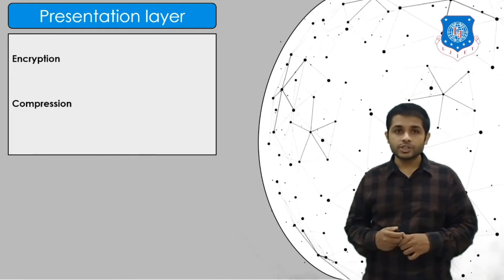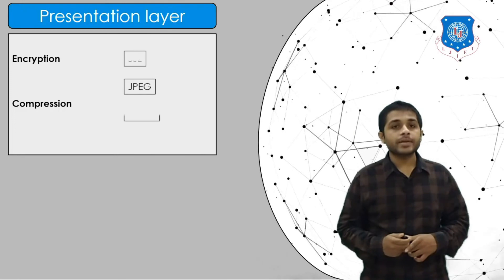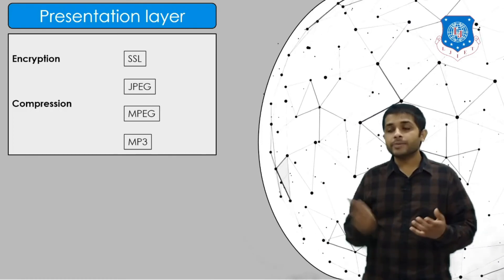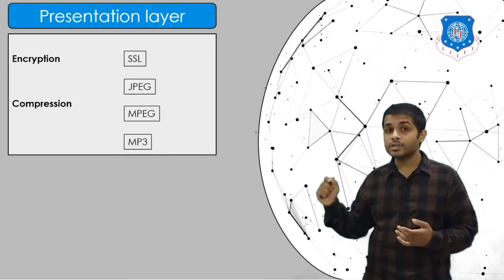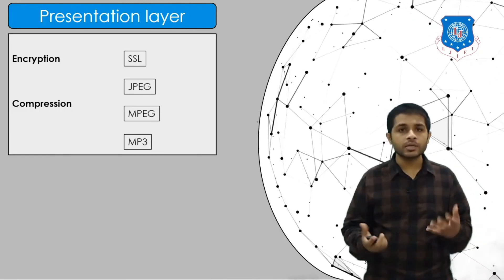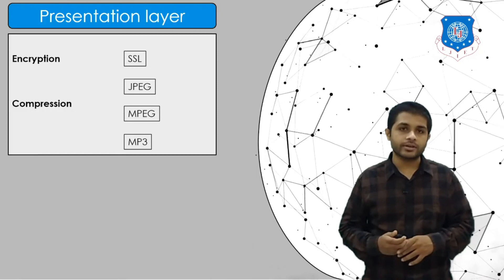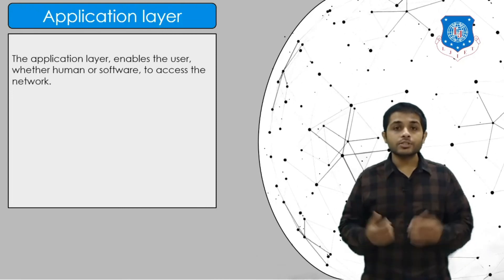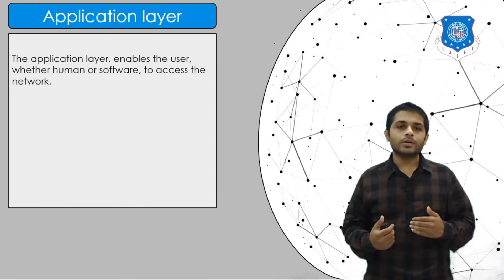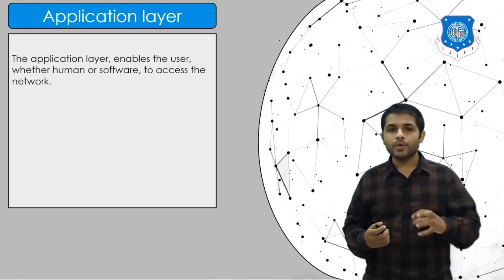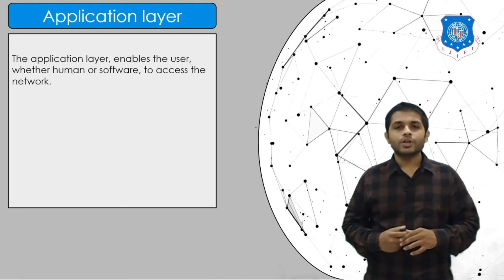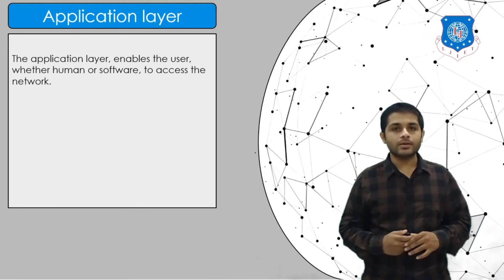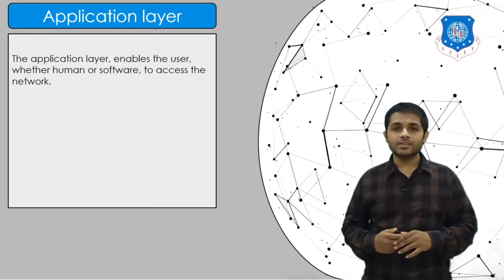The presentation layer's responsibilities are translation, encryption, and compression. Encryption provides the SSL layer for security. Compression relates to file formats such as JPEG, MPEG, and MP3. The last layer is the application layer, which enables users to communicate through the internet and provides an interface to the user. This concludes the responsibility of the OSI layers — I hope you have learned many new things. Thank you so much.